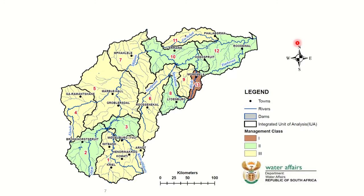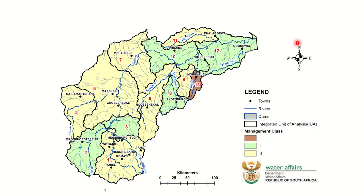So we have these categories — Class 1, 2, and 3. This is the Olifants River catchment, going from Emalahleni all the way downstream into the Kruger National Park. This map shows how the catchment has been split into different integrated units of analysis, or IUAs — 12 different areas. Because certain activities or protection importance are similar within each area, a class — Class 1, 2, or 3 — is assigned to each one.